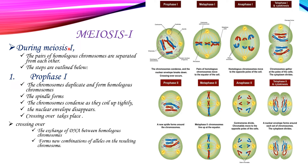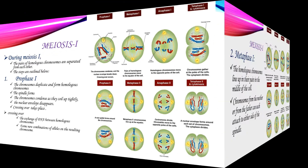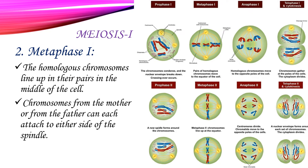In meiosis one, the pairs of homologous chromosomes are separated from each other. The steps are outlined below. Let's talk about the phases — starting with metaphase one.